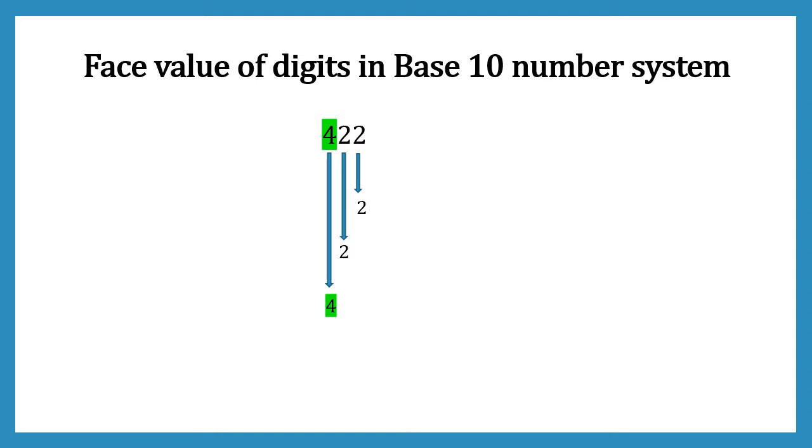What we have understood here is that the face value is nothing but the digit itself. Irrespective of where digit is placed in number, face value remains same. If we look at the 2s at right hand side, the first 2 is at first place but its face value is 2. The second 2 which is at second place from right, its face value again is 2. Face value doesn't change with the placing of a digit in a number.